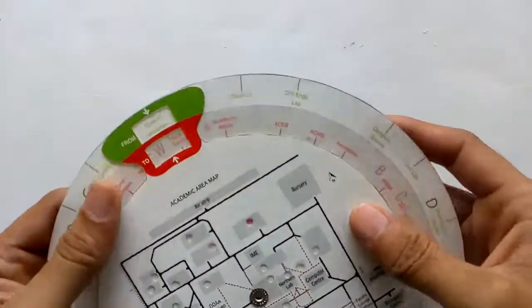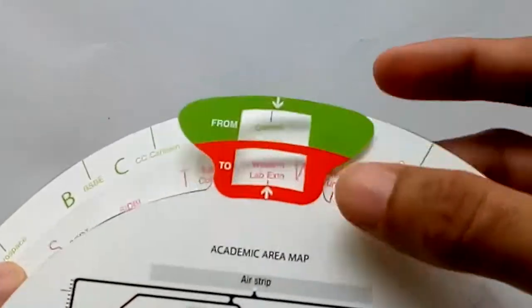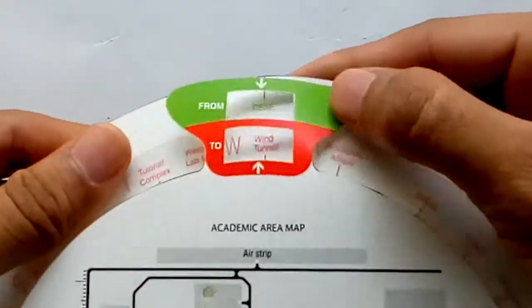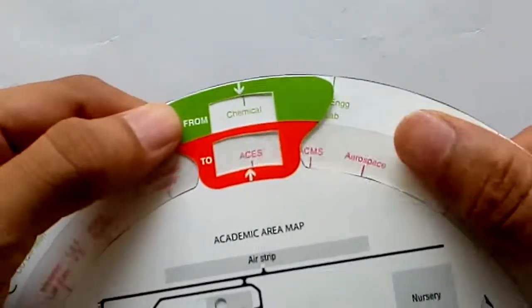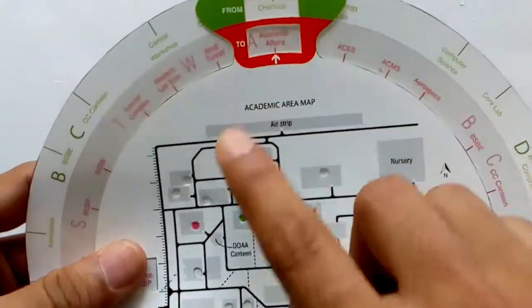How to use Aligno? It's fairly easy. First, align your current location to the 'From' box. Second, align your destination to the 'To' box. That's it - the green circle and red circle on the map will direct you between the from and to places respectively.